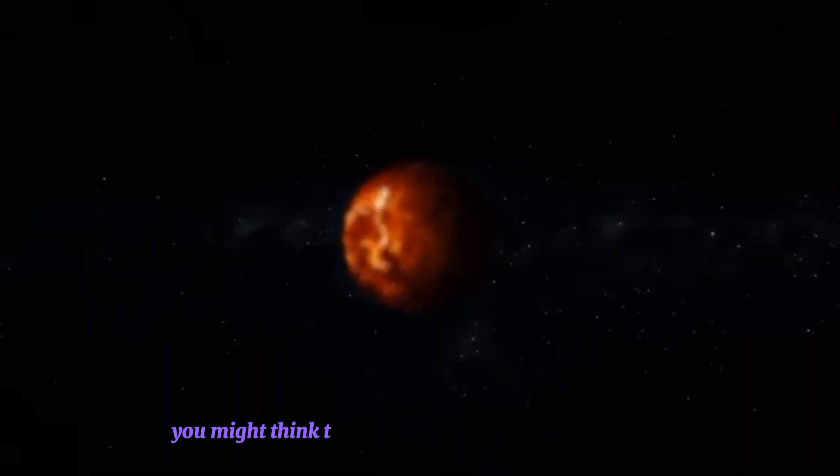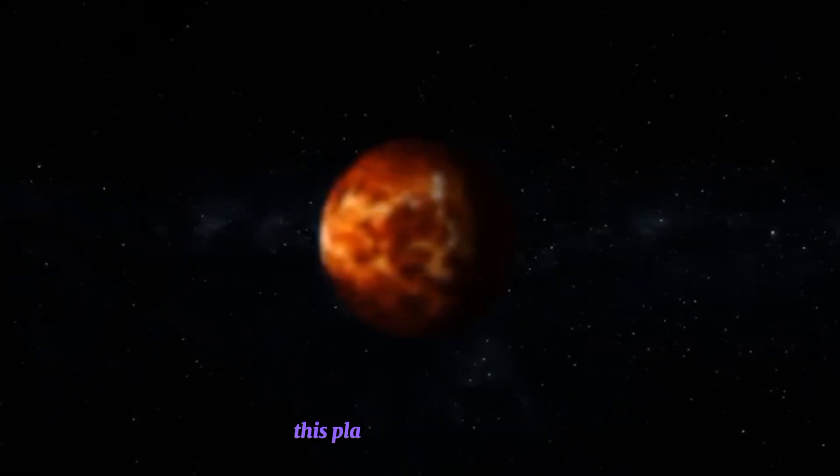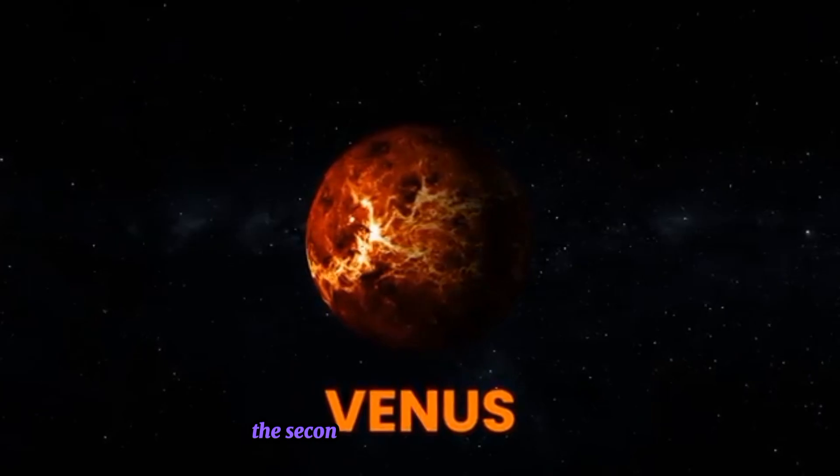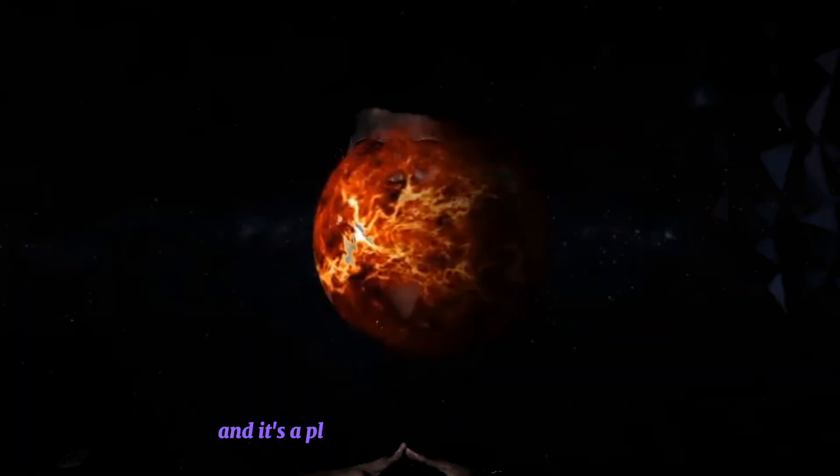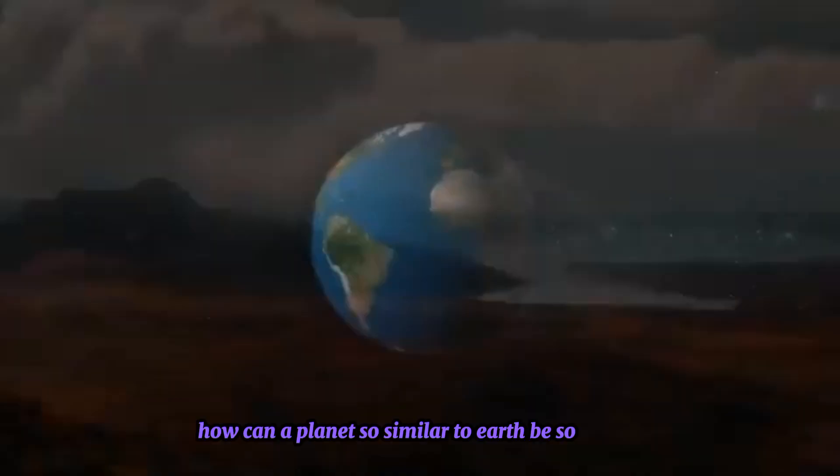Now, you might think that we should consider moving there, right? But here's the catch. This planet is actually Venus, the second planet in our solar system, and it's a place no human could ever survive. But why? How can a planet so similar to Earth be so deadly?